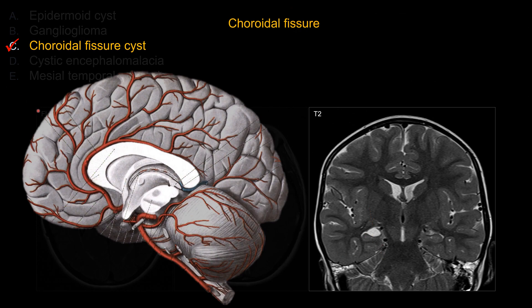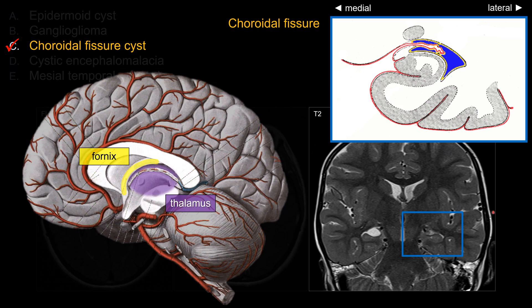So what is a choroidal fissure cyst, or what is a choroidal fissure? The choroidal fissure is a C-shaped cleft that serves as the attachment point for the choroid plexus. It's located between the thalamus and the fornix. At the level of the temporal horn, you can see in this diagram that laterally in the temporal horn there is choroid plexus, and the medial aspect of the hippocampus is the fimbria. So the choroidal fissure is the attachment point for the choroid plexus, sitting superiorly and medially to the fimbria, between the hippocampus and the adjacent thalamus.